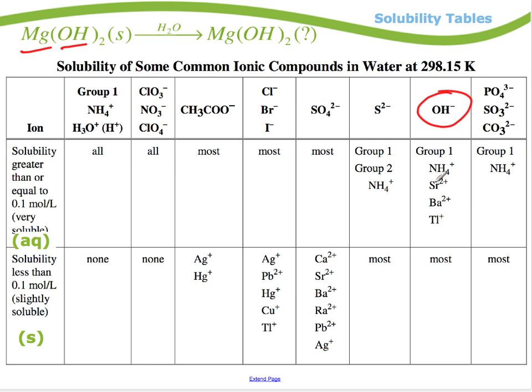If those hook up with hydroxide, it's aqueous. Otherwise, everything else is a solid. Now group one bothers me a little bit. Is magnesium in group one? If you look on the periodic table, group one is here, and group one are the ones in the first column. Just the first column.